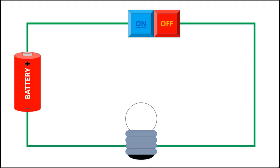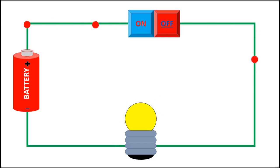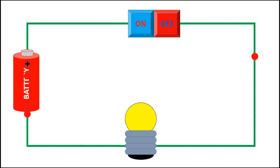When the circuit switch is off, no electricity will flow and the circuit is called an open circuit. When the switch is turned on, the electrons move in the circuit and the bulb glows.